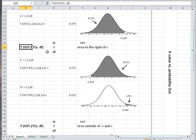For the area to the right of minus 2.228, we get 97.5%. The area to the right of 2.228 is 2.5%. These are exactly the opposite of the original DIST function.